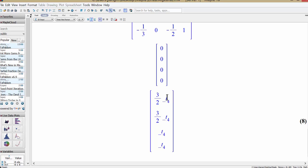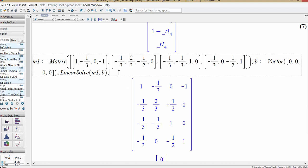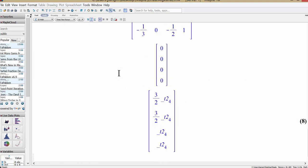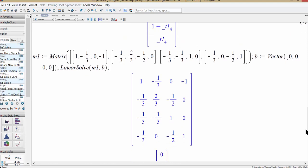We again see a one-parameter family of solutions. This t4 is our arbitrary number, the parameter, so-called free variable. And this is a way of solving a linear system using Maple. At least we can use this software to verify if our solutions are correct when we are solving a linear system.